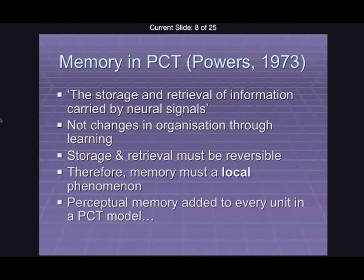Bill Powers makes a real distinction about memory. He defines it as the storage and retrieval of information carried by neural signals. It's the storage of those signals that are going through the loops that we've already modelled. So it's not merely having that information in the moment — as when we did a block diagram — but having some component of that block that allows it to store a history of the signals that have come through it.